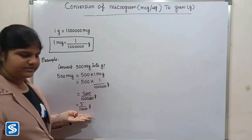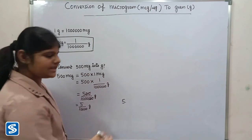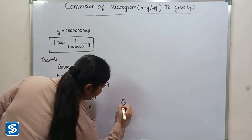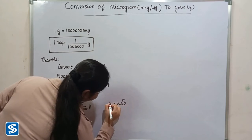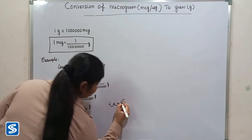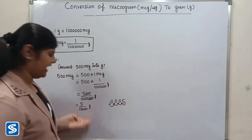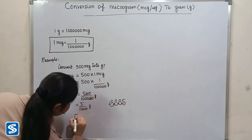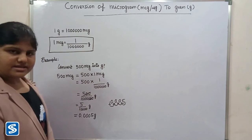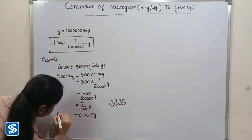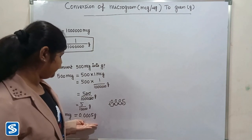The easy way to divide by ten thousand is to move the decimal point four places to the left: one, two, three, four. Now we have to fill zeros in the empty spaces. When we divide five by ten thousand, our answer will be 0.0005 grams. So 500 micrograms is equal to 0.0005 grams.